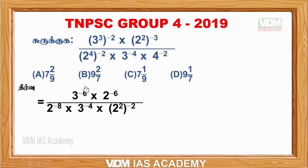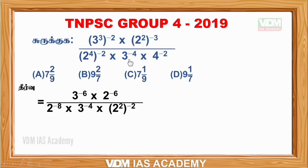If you look at whole power and multiply, this is the rule. The rule is: 3 cube whole power minus 2 is 3 into 2, multiplied by 3 power minus 6. Similarly, 2 power minus 2 into 3 is multiplied by 2 power minus 6. And 2 power minus 2 whole power minus 2 gives 2 power minus 8. Then 2 power minus 4.